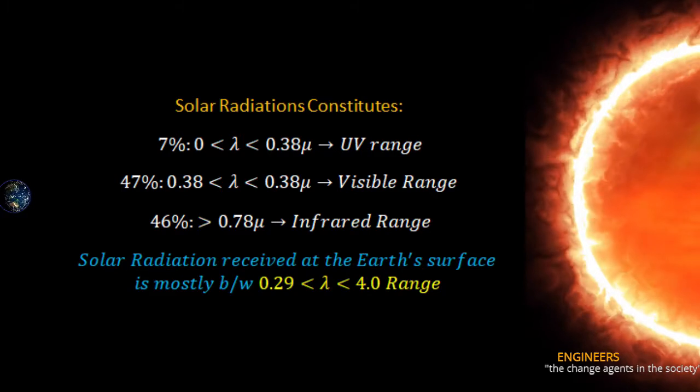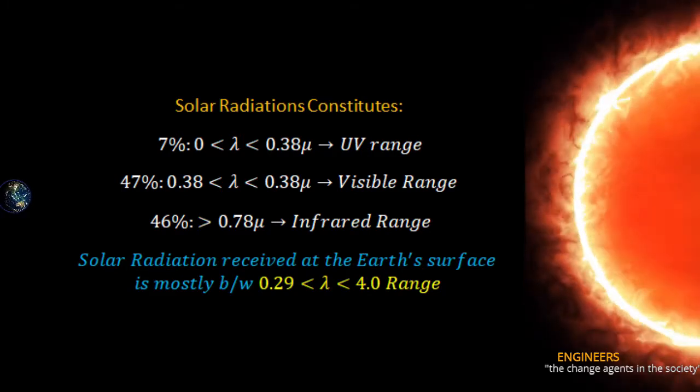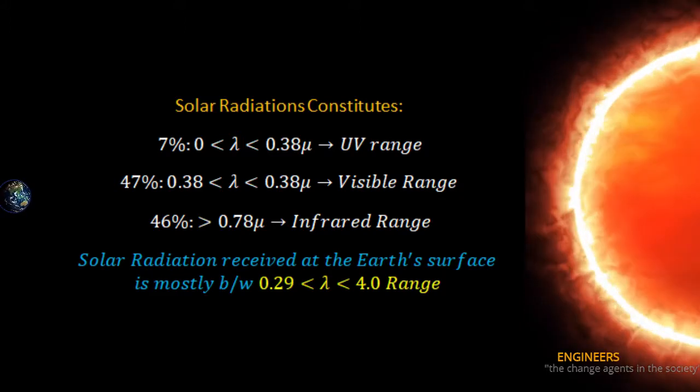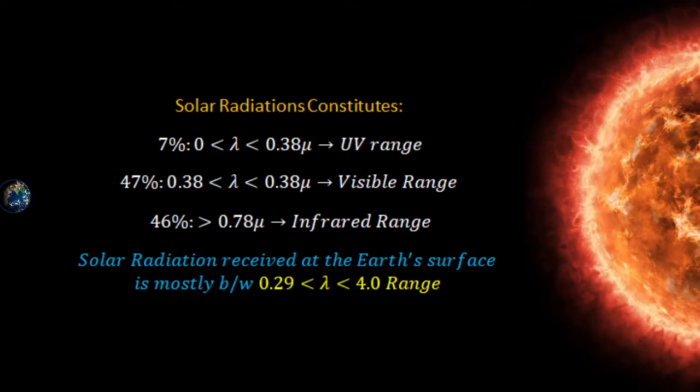46 percent falls in the range of greater than 0.78 microns, which is the infrared range. Solar radiation received at the earth's surface is mostly in the range of greater than 0.29 and less than 4 microns.